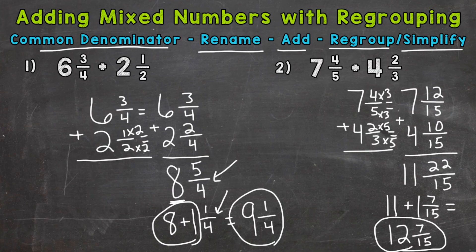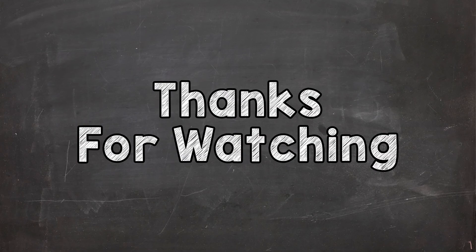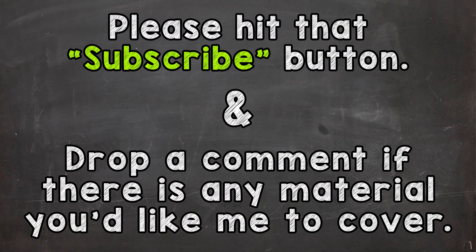So there you have it — that's how you add mixed numbers with regrouping. All you need to do is convert the improper fraction to a mixed number, then combine your whole numbers and bring your fractional part down with your answer as well. I hope that helped. Thanks so much for watching. Until next time, peace.